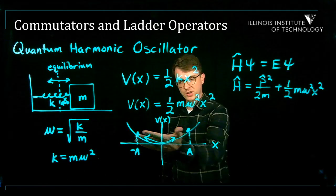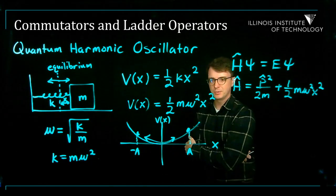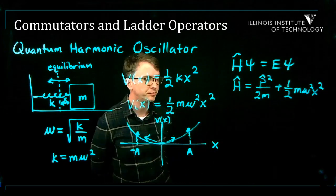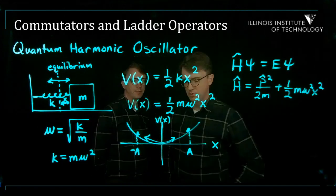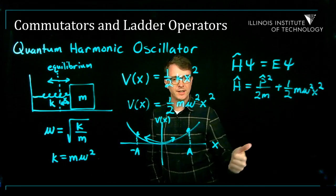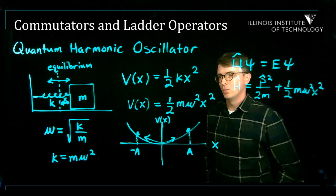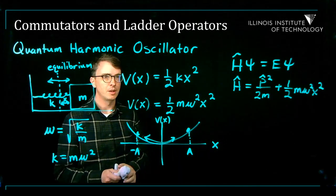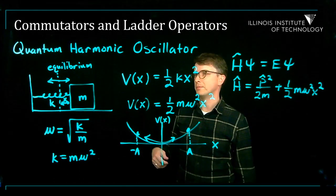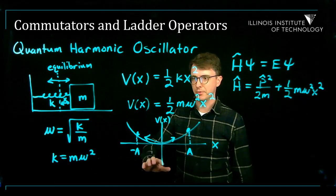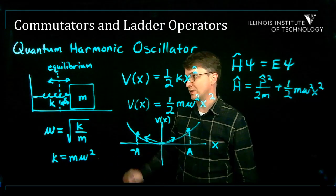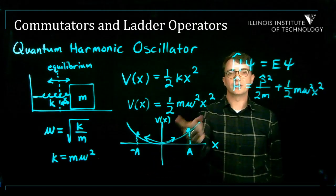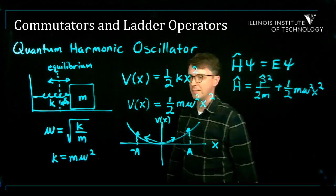We also want to know the wave functions that describe a particle in this potential. Normally you would solve this differential equation directly, but there's a really cool trick for finding the energy levels and wave functions without solving any differential equation at all. To exploit that trick, we need to learn some more math about operators — that's why this lecture is titled Commutators and Ladder Operators.